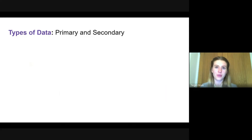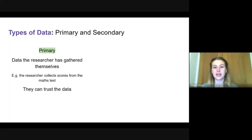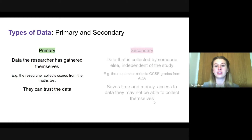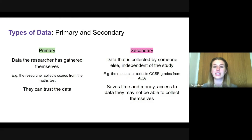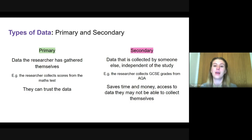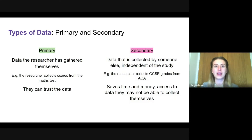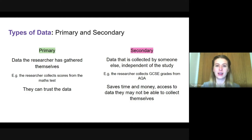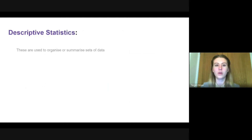We can also categorize data into primary and secondary data. Primary data is data the researcher has gathered themselves — for example, collecting math test scores. The benefit is that we know we can trust the data; we've standardized the test and know it's valid. Secondary data is collected by someone else independent of the research study. For example, we could use data from exam boards such as AQA or OCR and collect all the GCSE grades. A benefit is it saves time and money and gives access to data we couldn't collect ourselves.